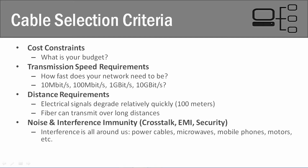So what's the first criteria? Well, the first criteria is always going to be your budget — what can you afford? Ideally there are certain types of network cabling that we want, but what fits best within our budgets? What can we afford and what do our resources allow us to purchase?